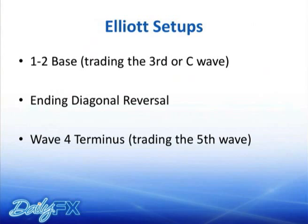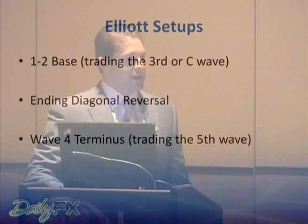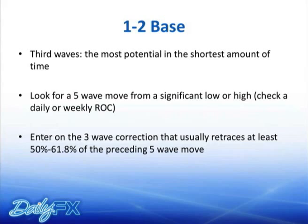The second setup is an ending diagonal reversal — also can be thought of as the end of a wedge pattern. This happens at the end of larger moves for the most part. The third setup is finding the last correction in a trending market — finding that wave four endpoint. The channeling technique is the best way to do that. Why do we want third waves? Because they usually have the most potential for the largest move in the shortest amount of time.